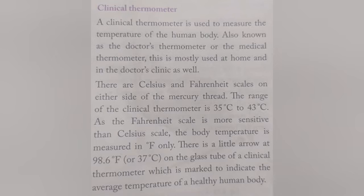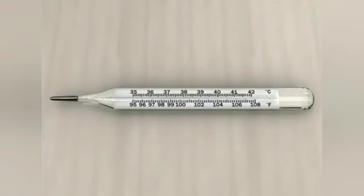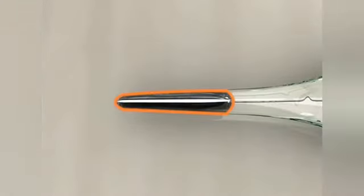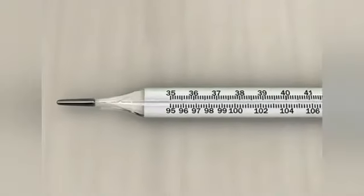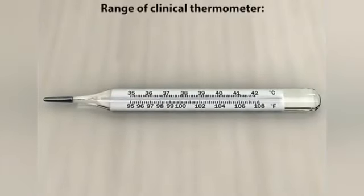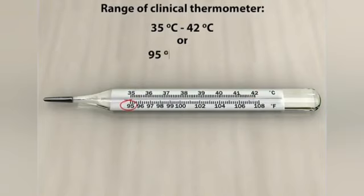Next is the clinical thermometer. A clinical thermometer is used to measure the temperature of the human body. It is also known as a doctor's thermometer or medical thermometer, and is mostly used at home, in the doctor's clinic, and in hospitals. It has a glass tube with a mercury-filled bulb at one end and a fine capillary tube containing mercury or alcohol. There are Celsius and Fahrenheit scales on either side of the mercury thread. The range of a clinical thermometer is 35°C to 42°C, or 95°F to 108°F.